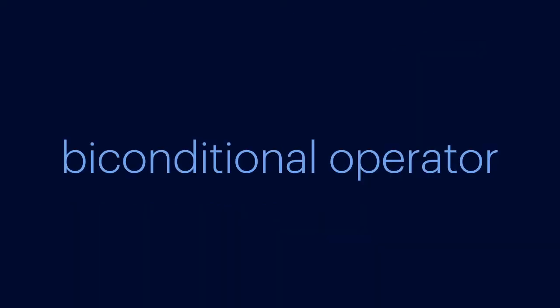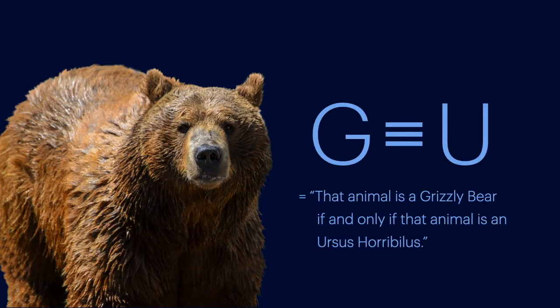Lastly, we have the biconditional operator, typically represented by triple bar or double-headed arrow. It reads, if and only if, as in, that animal is a grizzly bear, if and only if, that animal is ursus horribilis.